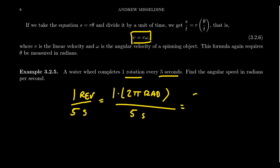So one revolution would be the same thing as 2π radians. So that one revolution turns into 2π. You have five seconds right there. And so this would give us 2π over 5.